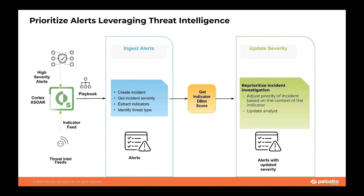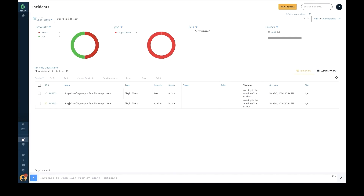That saved time could instead be used on investigating actual high severity incidents containing high-risk indicators. This can be automatically achieved by aligning the incident severity with Cortex XSOAR's DBot indicator score of indicators belonging to that incident.